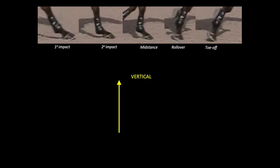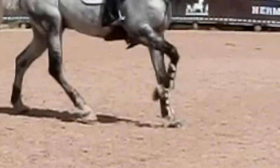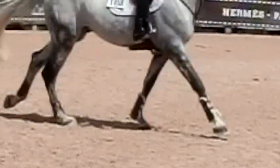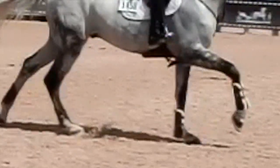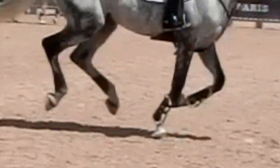Now, in biomechanics, we break down forces into three directions: the vertical direction, the anterior-posterior or forward-backward direction, and the medial-lateral or side-to-side direction. And in any sport, it is critical to understand the general force profiles that occur during movement. In horses, the force profiles are a bit different between the front and hind legs and the leading and trailing legs, but in general, they will follow these characteristic shapes.